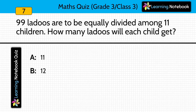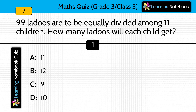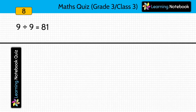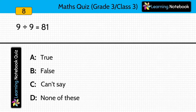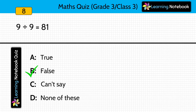Next question: 99 ladus are to be equally divided among 11 children. How many ladus will each child get? 99 divided by 11 equals 9. Then: 9 divided by 9 equals 81 — is it true, false, can't say, or none of these? Answer is false. 9 divided by 9 equals 1.